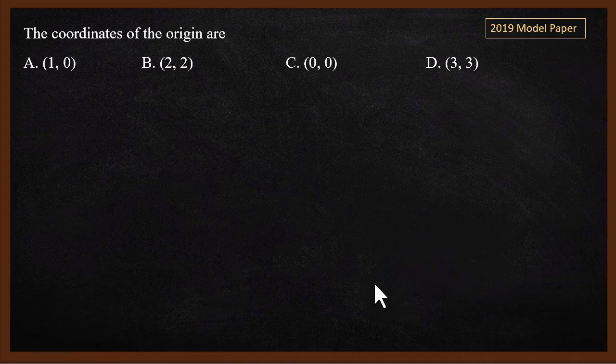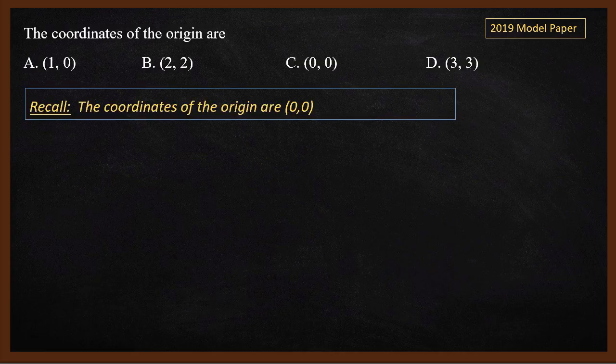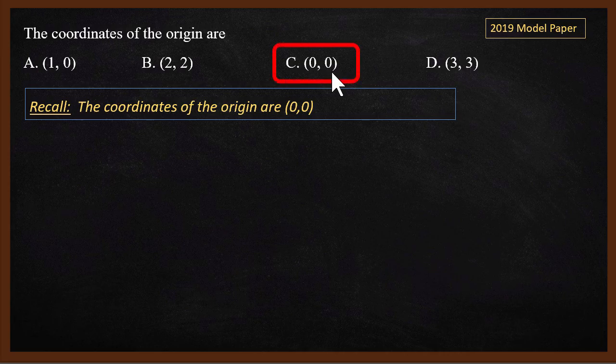The first question came in the 2019 model paper: what are the coordinates of the origin? The origin is always (0, 0). So in coordinate geometry, the origin is (0, 0). The answer is C because it is (0, 0).